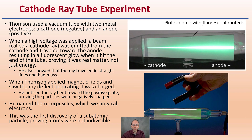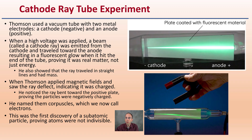So this cathode ray tube experiment that he is so famous for — what is it about? He used a vacuum tube, indicated right here, with two metal electrodes: one negative, which is the cathode, and one positive, which is the anode. When high voltage was applied, a beam called a cathode ray was emitted and traveled towards the anode, resulting in a fluorescent glow as it hit the end of the tube. This proved that this was real matter and not just energy — the ray traveled in a straight line and had mass.